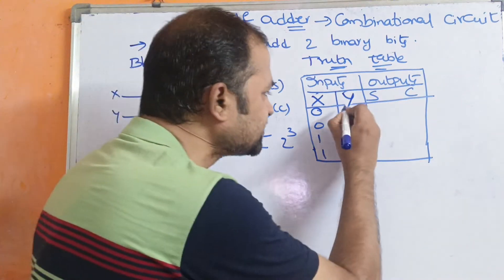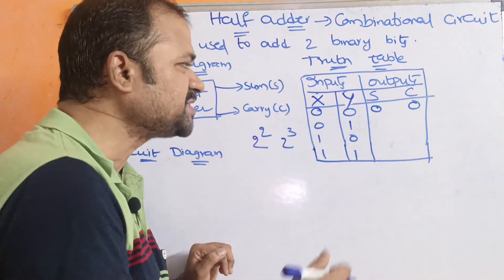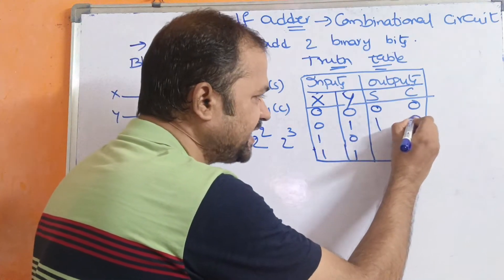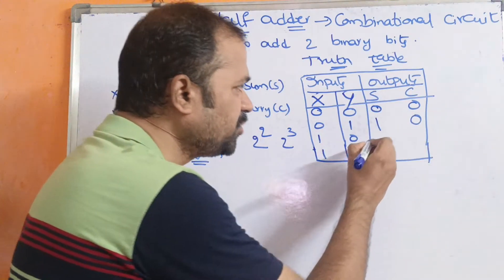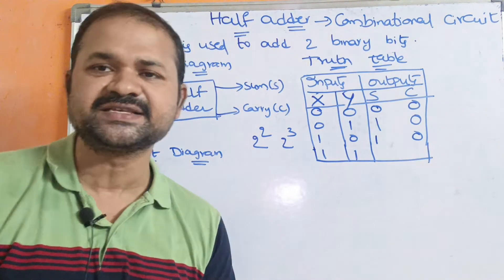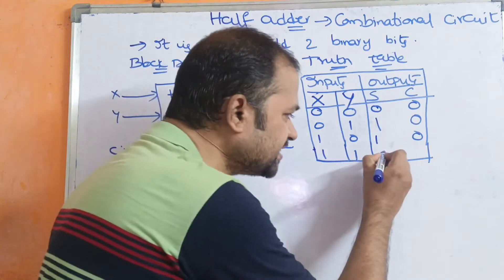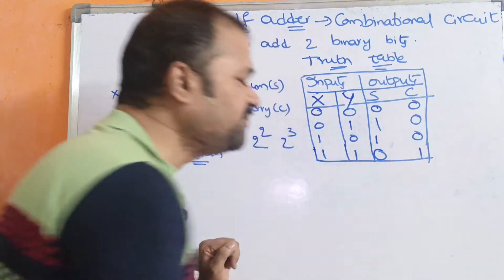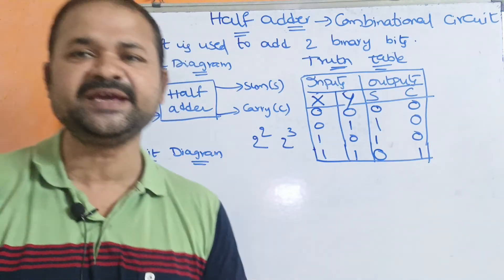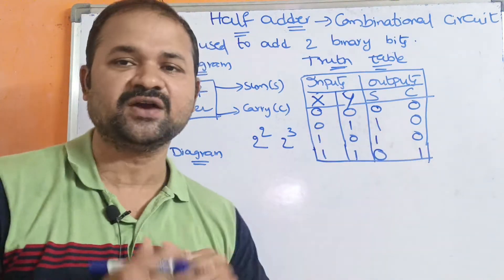From the truth table: 0 plus 0 gives sum 0, carry 0. 0 plus 1 gives sum 1, carry 0. 1 plus 0 gives sum 1, carry 0. And 1 plus 1 gives sum 0 with a carry of 1.